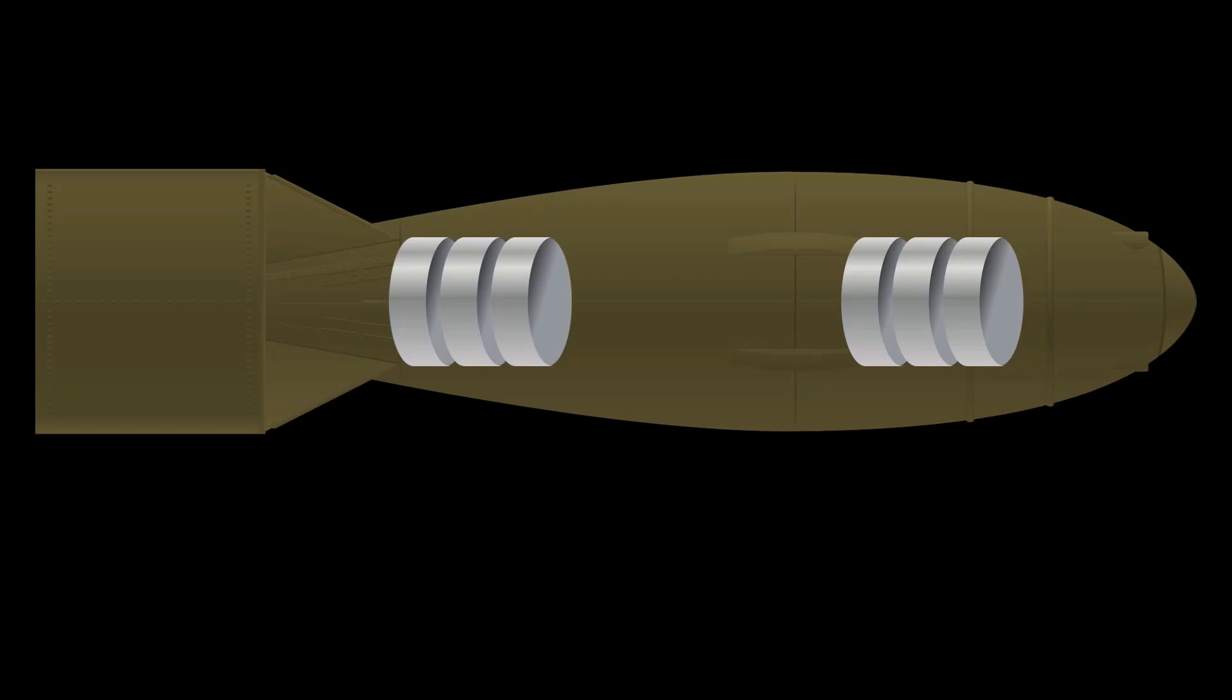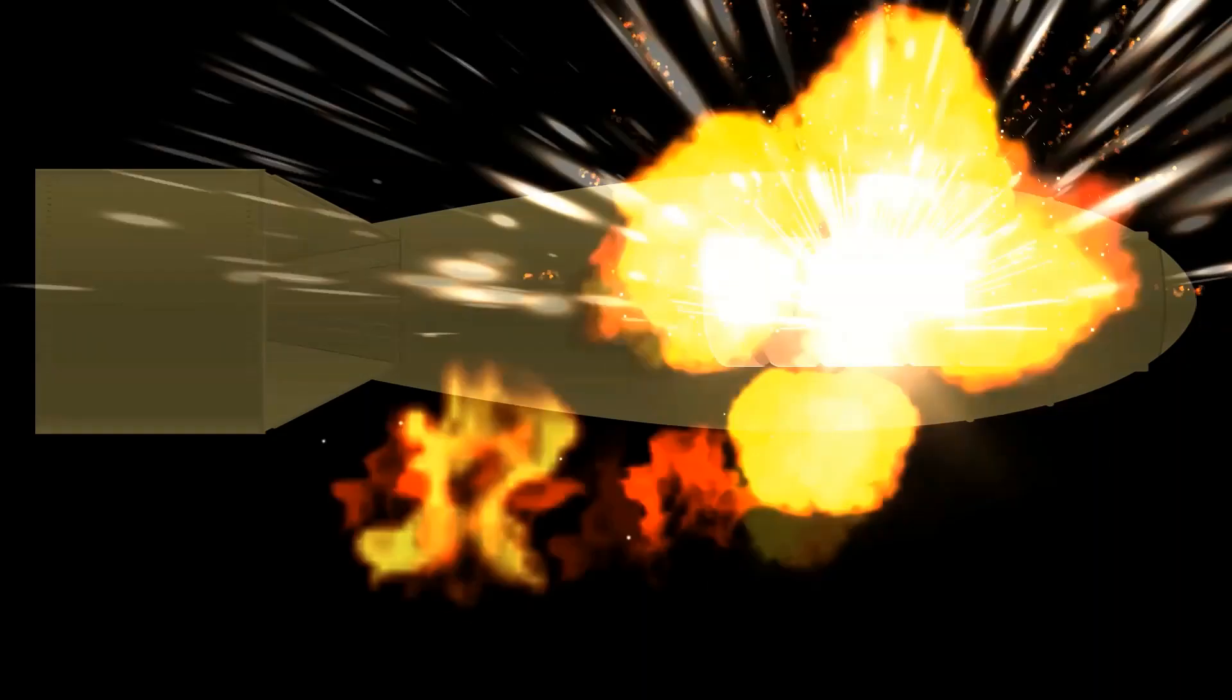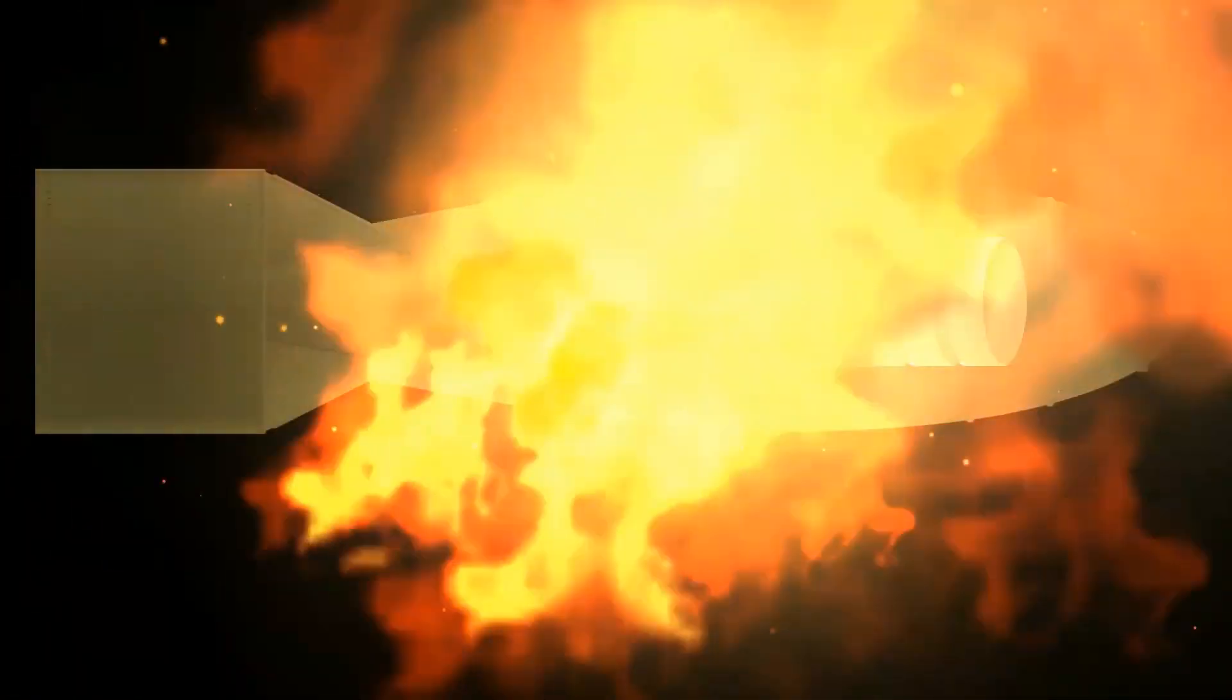By propelling a uranium-235 block onto another, the material becomes supercritical. Fission begins as I said before. In a split second, nuclear energy is released creating massive destruction.